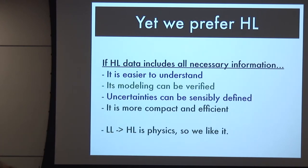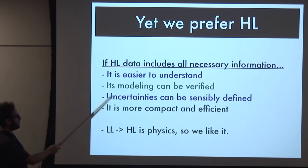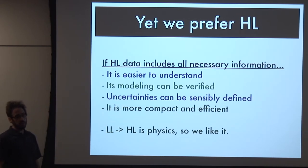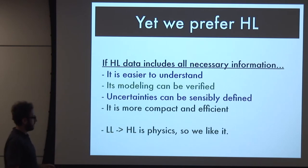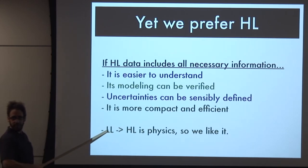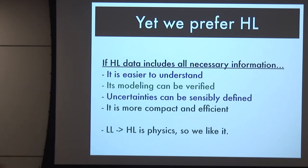We prefer high-level variables because they're easier to understand - you can look at a jet mass distribution and know what it means. Their modeling can be verified, uncertainties can be well-defined - theorists can say here's what this variable is sensitive to. It's more compact: why calculate 900 variables when you calculate 7? The step from low-level information to high-level information IS physics itself - let's not obviate it. In the end, we always need to translate back to our own brains. We're the physicists doing this for ourselves. Let's not have networks discover something and talk to themselves in a way we'll never understand.